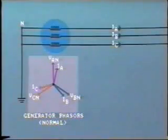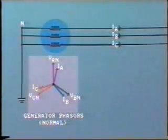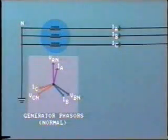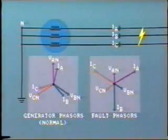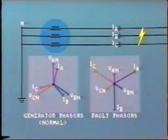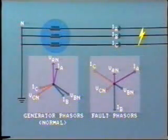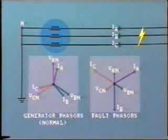As we already know, under normal operation, the power system is balanced and there is a symmetrical relationship between the three phase voltages and currents. Even with a three-phase fault, phase quantities remain 120 degrees apart. This symmetrical relationship helps simplify the calculation of currents and voltages under these conditions.